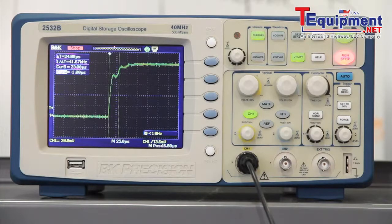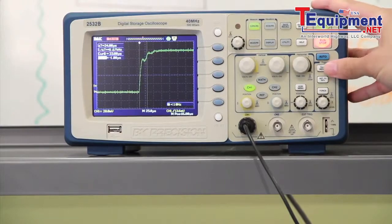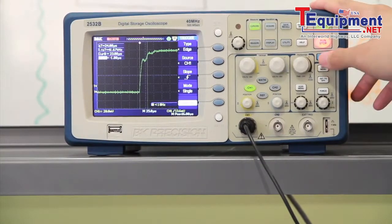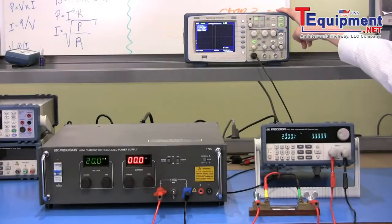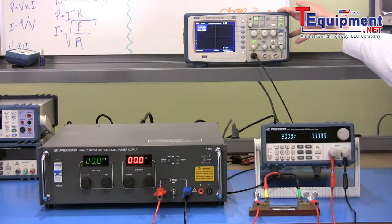On the oscilloscope, set up to use manual trigger. I'm going to set it up to do a single capture. From the trigger menu, change the mode setting to single capture. Now, it will look for a signal to trigger off of and capture a single screenshot.